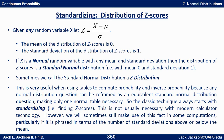If you have a table for the standard normal distribution, you can convert a problem about an arbitrary normal distribution to a standard normal problem and look up your values. This part is not usually necessary with modern calculator technology, since we can just input the mean and standard deviation directly for normal probability calculations. However, if a question is phrased in terms of the number of standard deviations above or below the mean, we can answer it using the standard normal directly, since that number of standard deviations is the z-score.